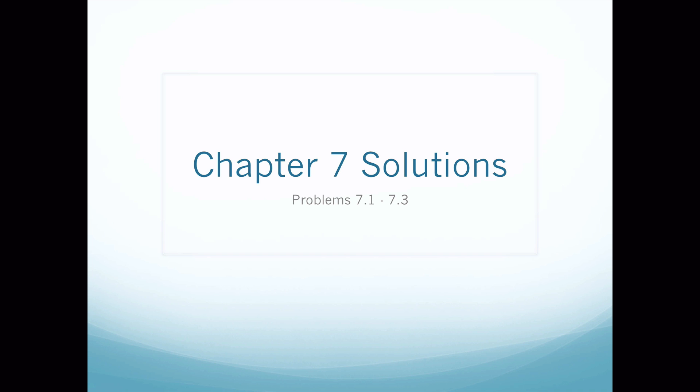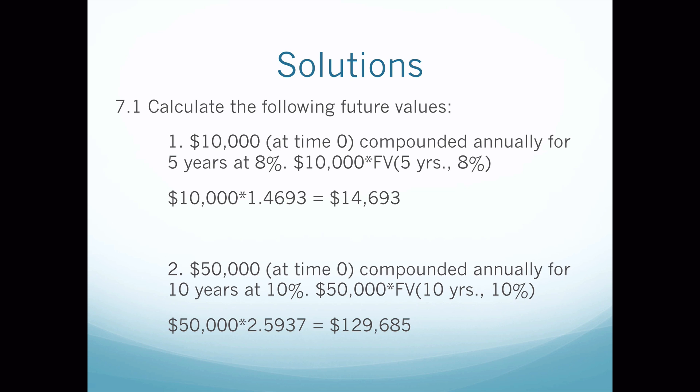We're starting on the solutions to Chapter 7 — the first three problems of the chapter. The reason I assign these is just so you get used to using those four charts we discussed in the lecture: the present value, future value, present value annuity, and future value annuity charts. When you look at the assignment description, 'calculate the following future values,' you know you're going to use either a future value or future value annuity chart. I'll point out keywords as we move along.